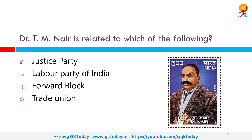Dr. T.M. Nair is related to which of the following? The correct answer is the Justice Party. The Justice Party, officially the South Indian Liberation Federation, was a political party in the Madras Presidency of British India. It was established on November 20, 1916 in Victoria Memorial Hall in Madras by T.M. Nair and P. Chetty, as a result of a series of non-Brahmin conferences and meetings in the Presidency.